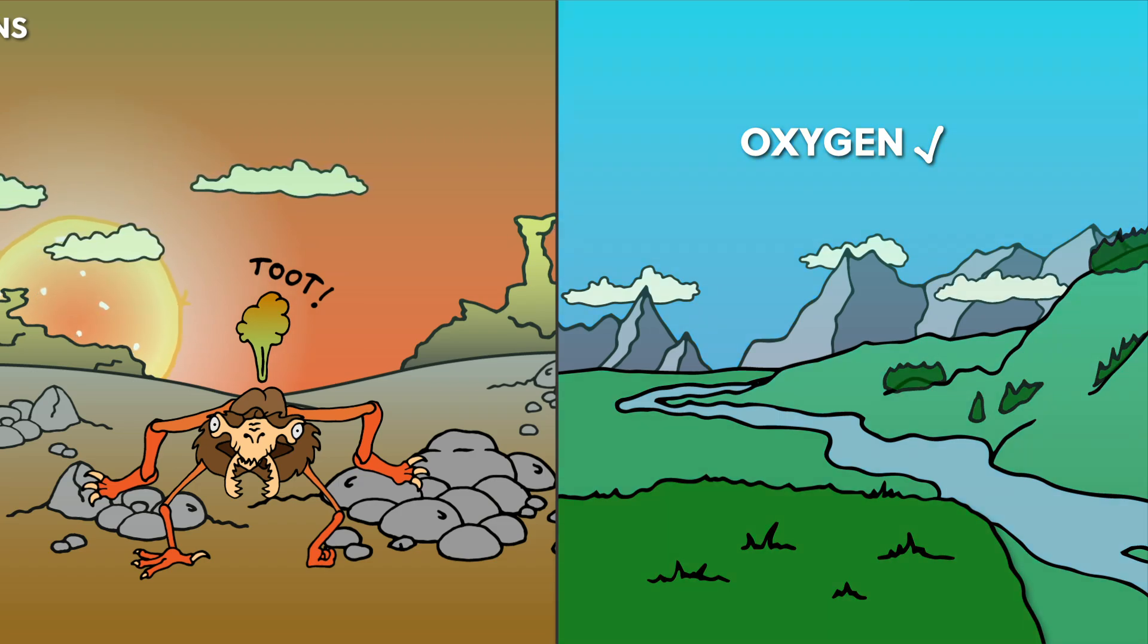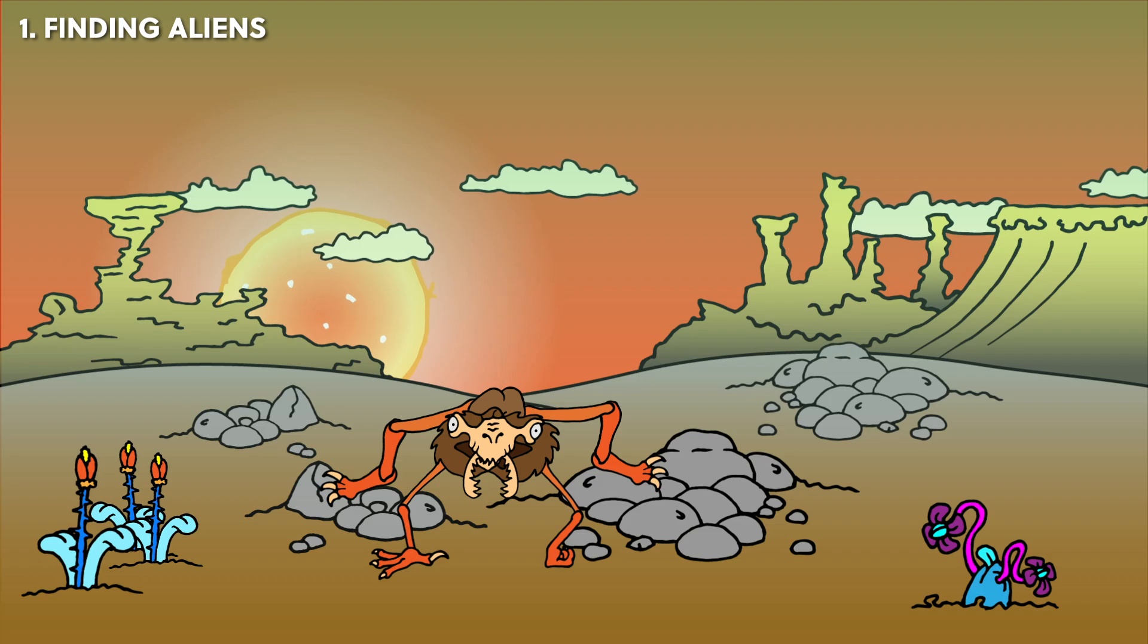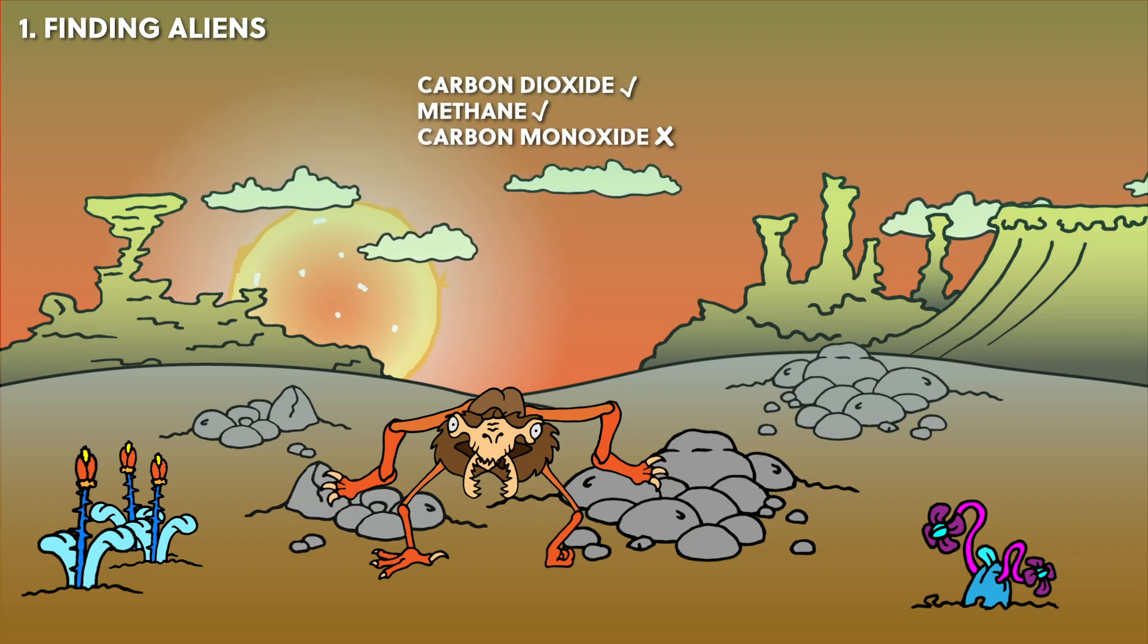If life disappeared on Earth, so would the oxygen. So if we see a distant planet with an atmosphere where the proportions of gases are inexplicable by the laws of chemistry alone, like lots of oxygen or a mix of carbon dioxide and methane but with little carbon monoxide, this would be a biosignature—a strong indicator that at least microbial life exists there.